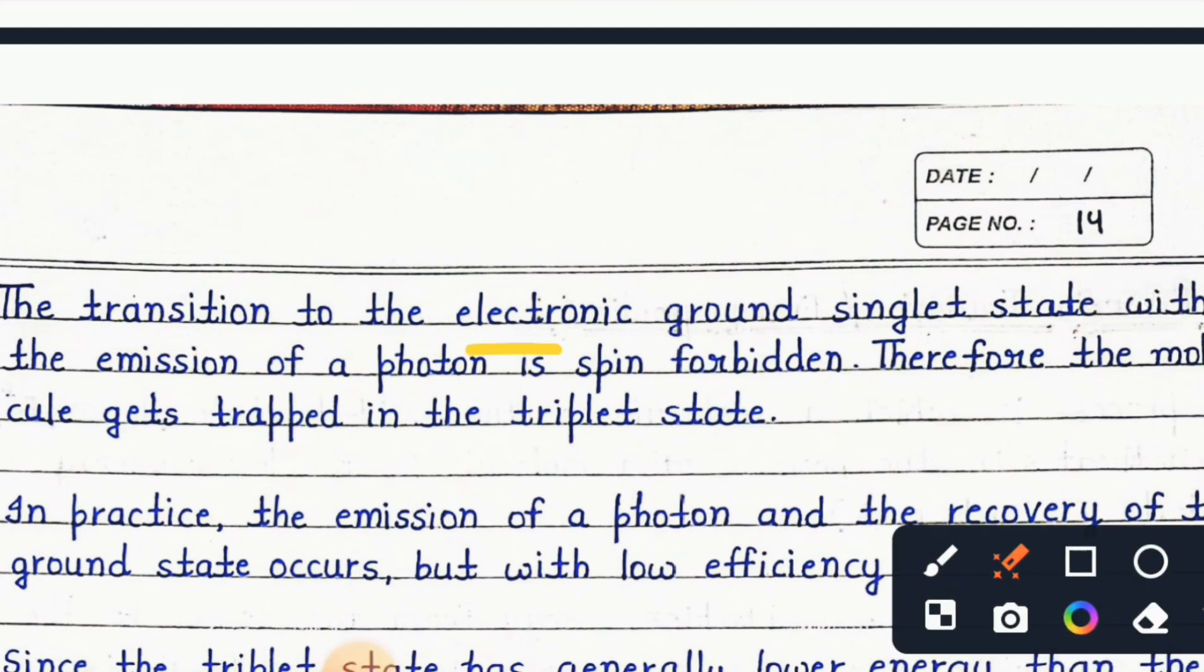The transition to the electronic ground singlet state with the emission of a photon is spin forbidden. Therefore the molecule gets trapped in the triplet state. In practice, the emission of a photon and recovery of the ground state occurs but with low efficiency.